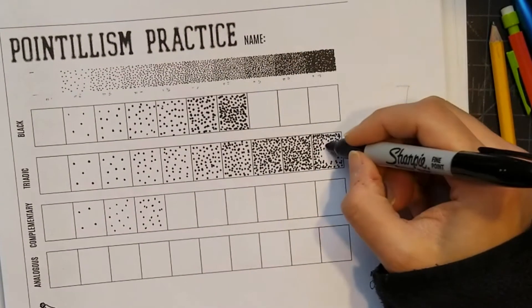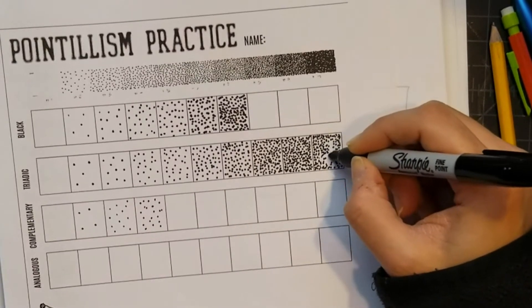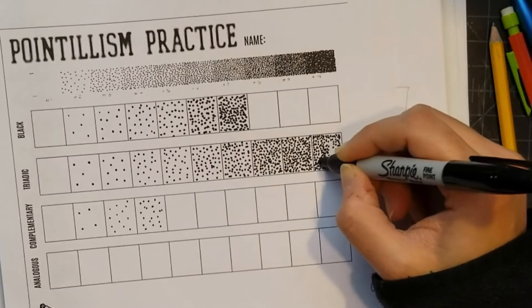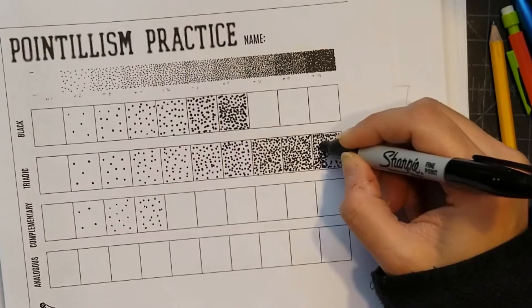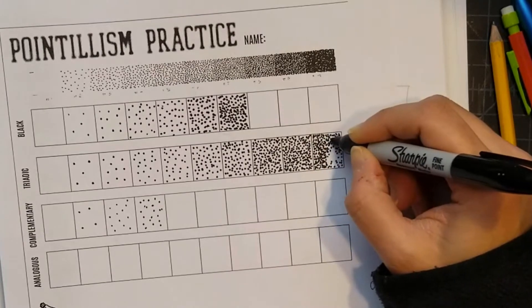At the top of our sheet, we have an example of what a 10 should look like, a nine, an eight, so on and so forth. So this is not dark enough yet, right? My dots are not dense enough to create the darkest value that I can get with this technique.